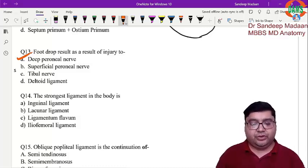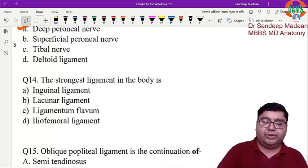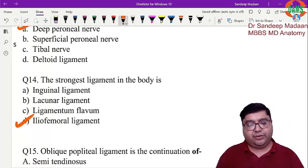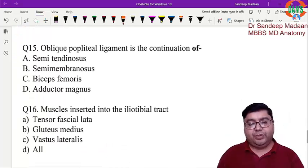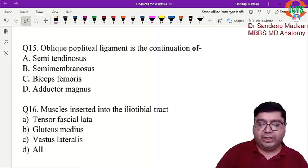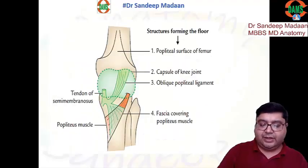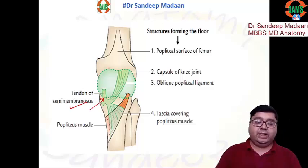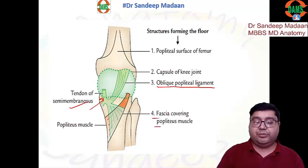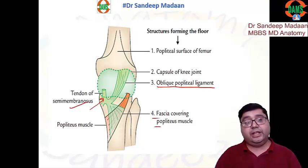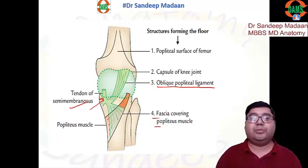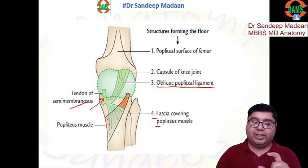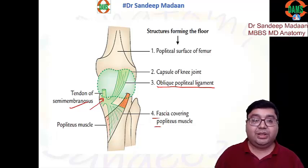The strongest ligament in the body is the iliofemoral ligament — a straightforward factual answer. Next question: the oblique popliteal ligament is a continuation of what? When semimembranosus comes for insertion in the popliteal fossa, it gives two extensions — one is the oblique popliteal ligament, and the other is the fascia covering the popliteus muscle. Both extensions form the floor of the popliteal fossa, so the answer is semimembranosus muscle.